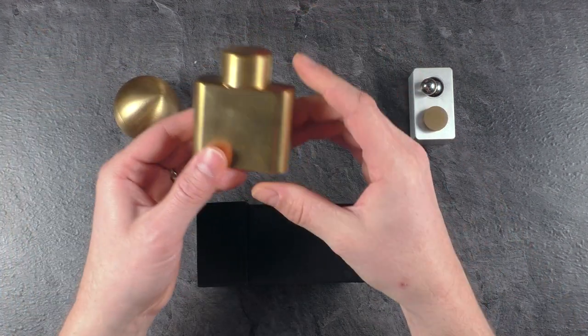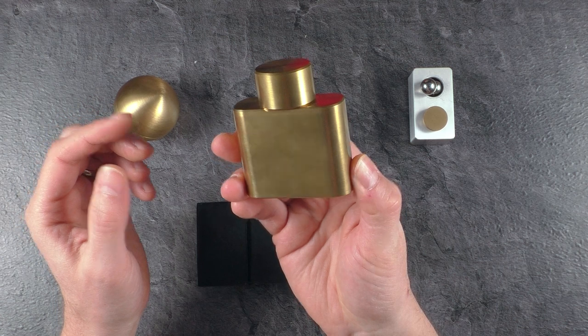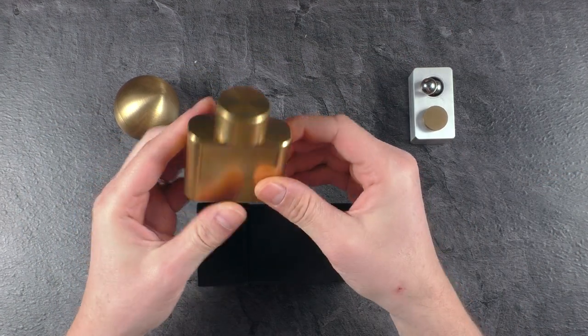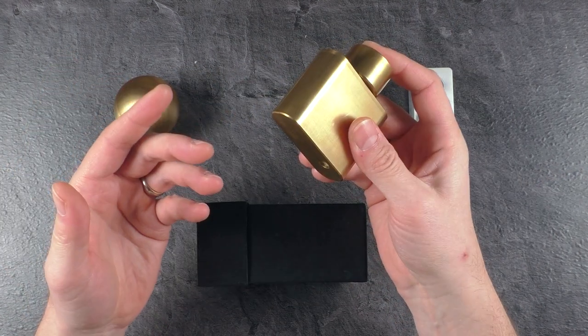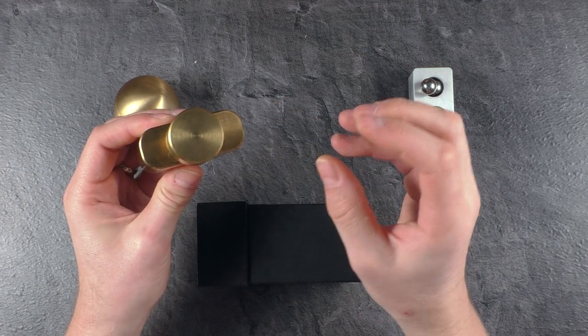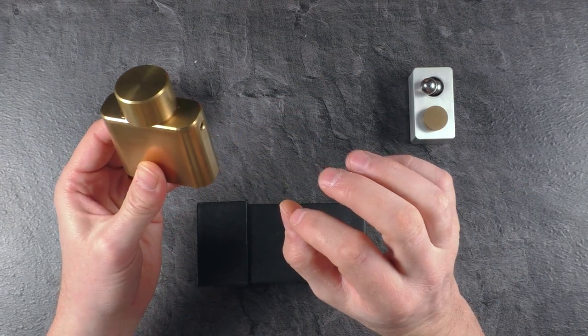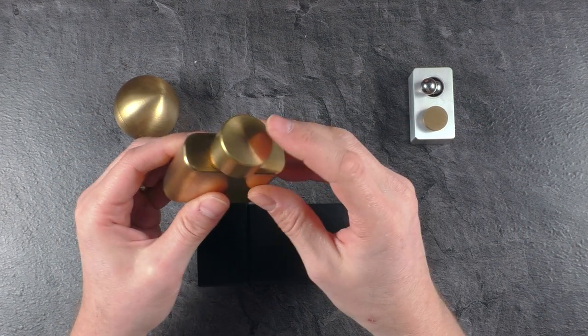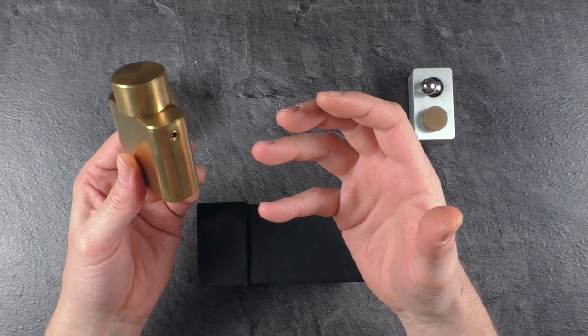The second puzzle he released was this puzzle here and how would you call it if you look at it? There's only one possibility. Yes. Hip flask. The hip flask is a maze puzzle and this one has also some little sequential discovery flavor added but it's not really a sequential discovery puzzle.